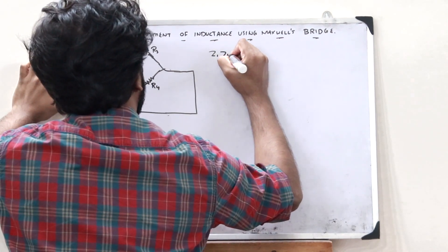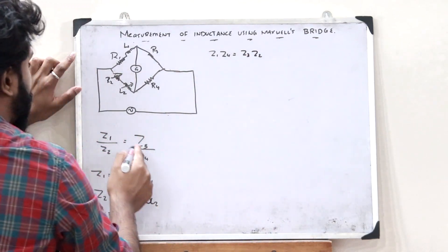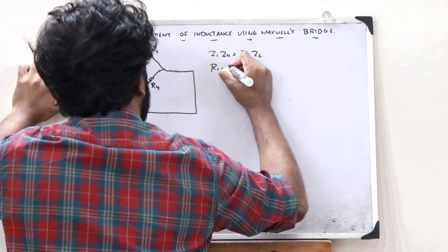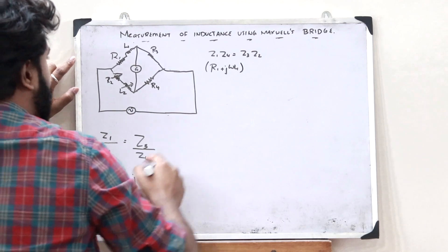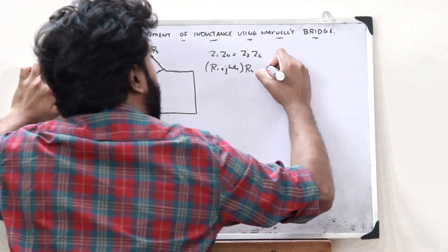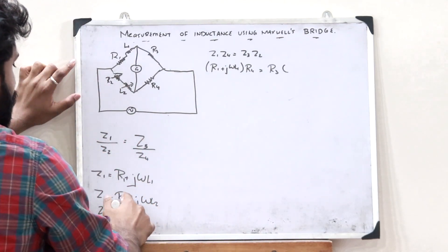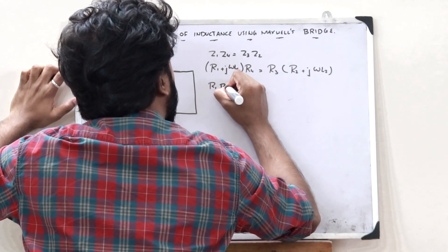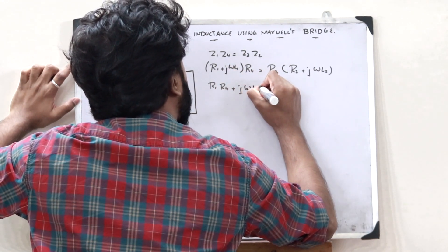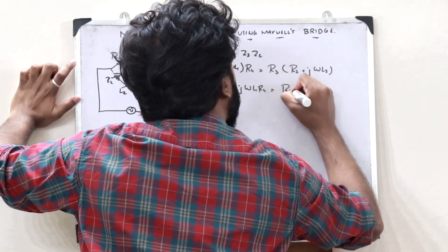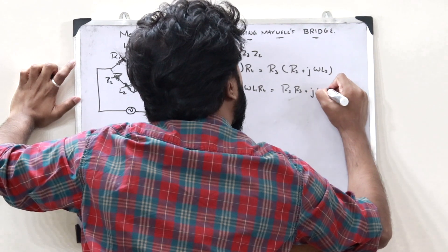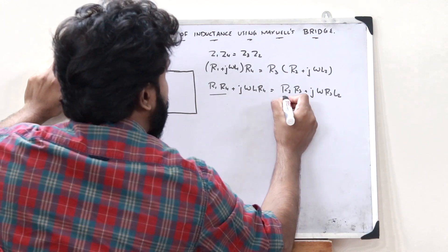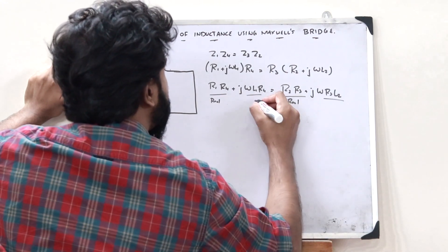On cross multiplying, Z1 times Z4 equals Z3 times Z2. Substituting in the values, we get R1 plus J omega L1, multiplied by R4, equals R3 multiplied by R2 plus J omega L2. Expanding this, we get R1 R4 plus J omega L1 R4 equals R2 R3 plus J omega R3 L2. These are the real parts and these are the imaginary parts.